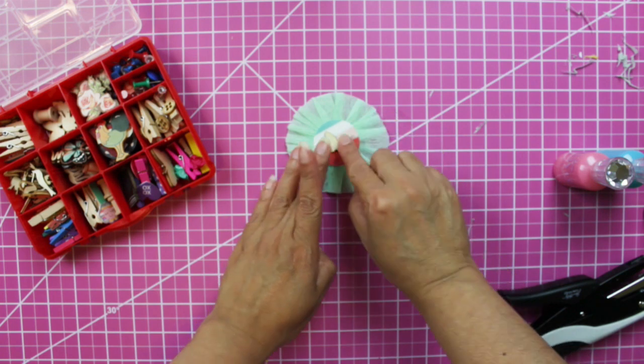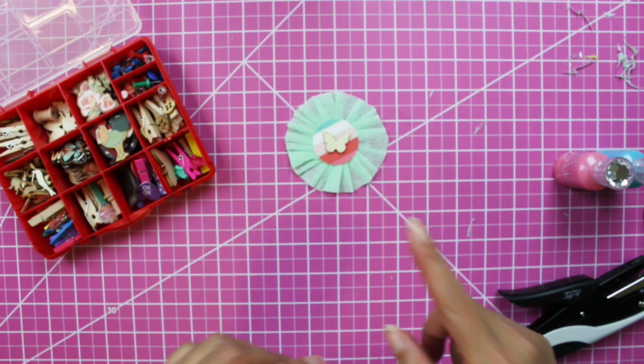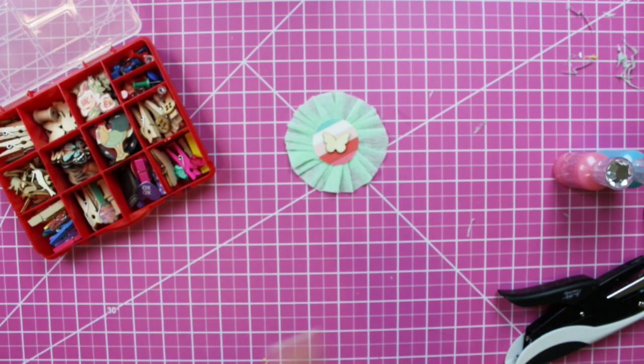Glue that butterfly with my fabric tag in the center, and then in the center of this rosette, I am going to add a jammy.